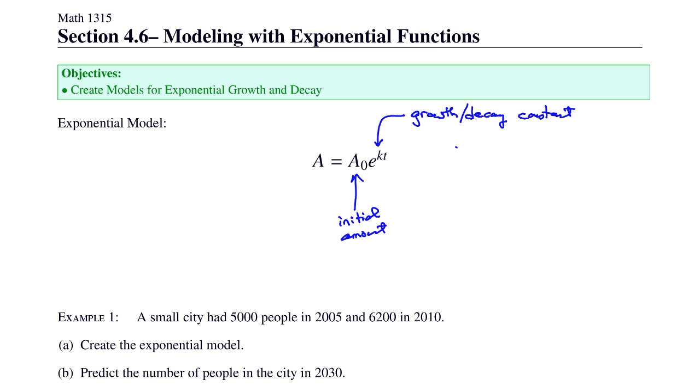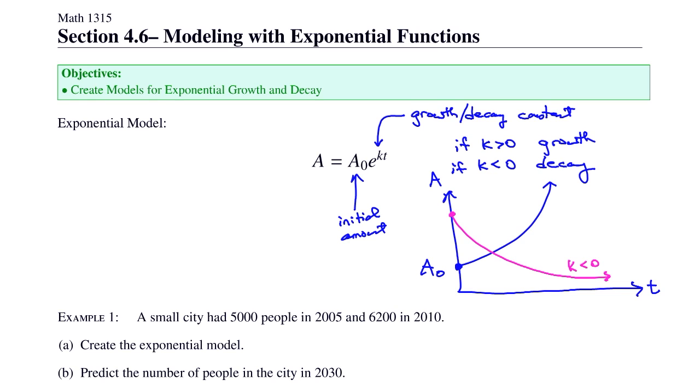If k is greater than zero, then we have growth. If k is less than zero, then we have decay. In general, the equation looks something like this. We're going to model this against t, and it's the amount. It's going to start at whatever the initial amount is and grow exponentially if the k is greater than zero. If it's decay, the initial amount's up here, and it's going to decay like that. This one would be if k is less than zero, but the blue one would be if k is greater than zero.